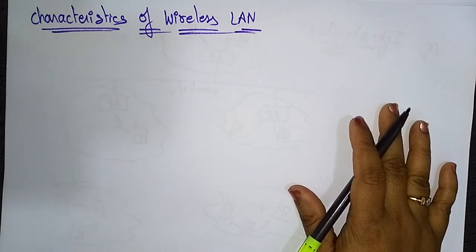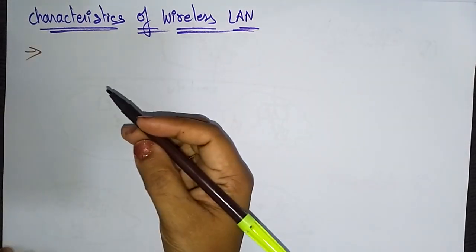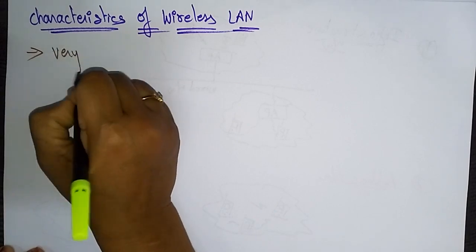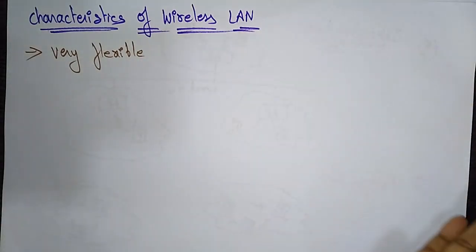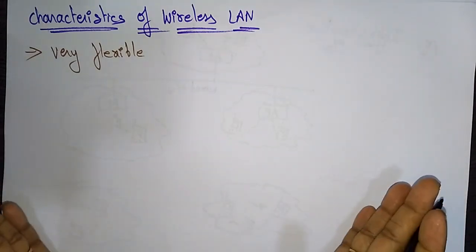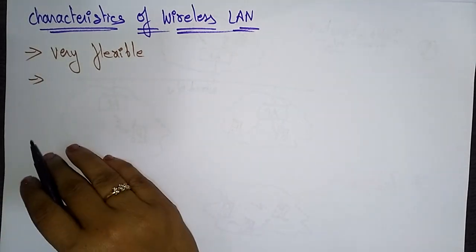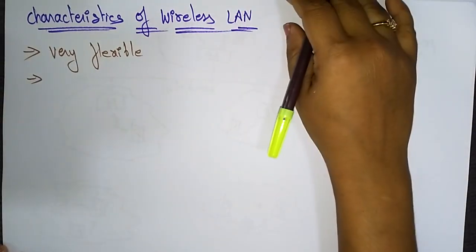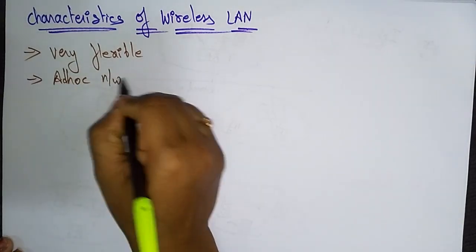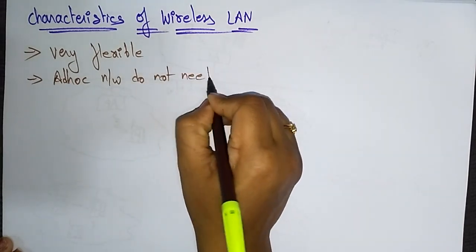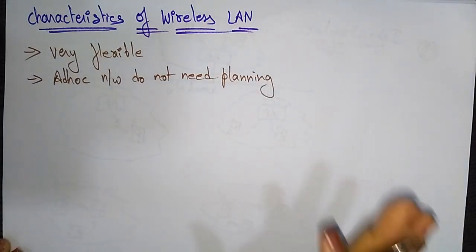These are the main advantages of wireless local area networks. First, they are very flexible within the reception area range. Ad hoc networks do not need planning — if you are using ad hoc networks, which are wireless, there is no need for planning before use. Just enable the ad hoc devices in your software and you can communicate directly without any access point.